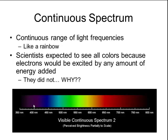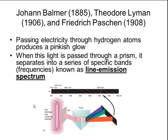Three scientists that started this research were Johan Balmer, Theodore Lyman, and Friedrich Paschen. What they did is they took electricity and they passed it through some hydrogen atoms. And you'll notice that when you take an electrical current and you pass it through hydrogen gas, it glows pink. And they expected to see that if they looked at that light through a prism that they would see that continuous spectrum of color.